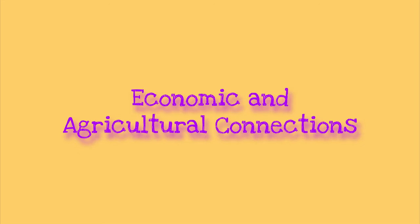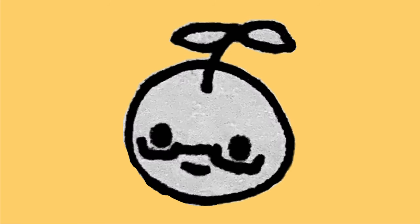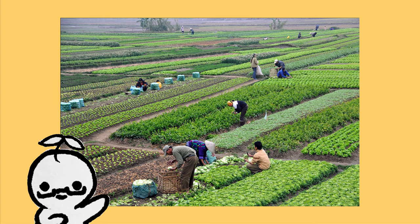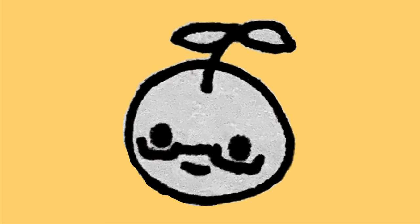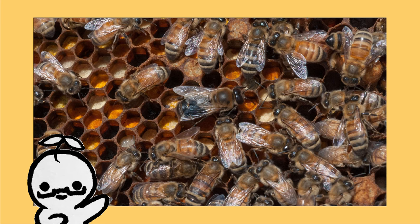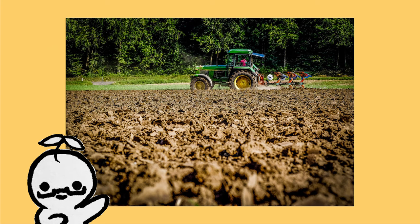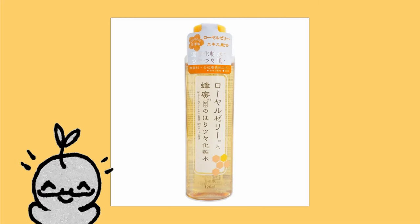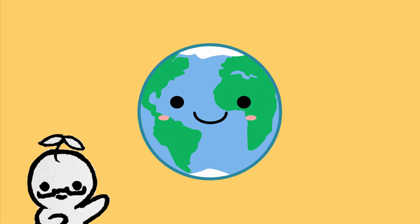Number four: economic and agricultural connections. Another important effect is how the bee population decline could majorly impact global economic systems and agricultural industries. Wild bumblebees are crucial to the agricultural industry and are important for the pollination of crops like blueberry, apple, tomato, coffee, and nuts. As a consequence, if the population continues to decline, the food supplies of assortment will become limited and increase the prices of the agricultural economy. Honey can also be found in an array of consumables around the world, and even in beauty products, especially in Japan. For this reason, bees are important as they interconnect the global economy with the agricultural industry.